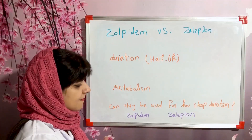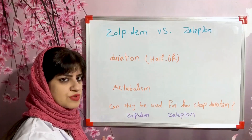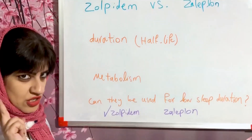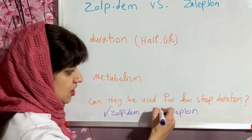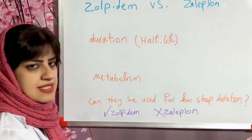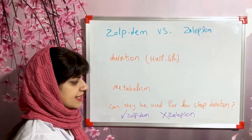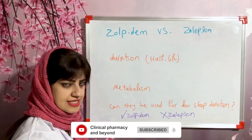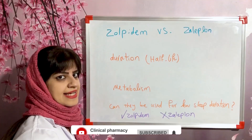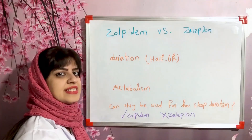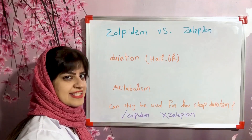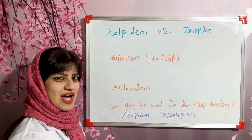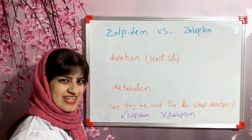To summarize: can these medications be used for low sleep duration? Zolpidem — yes, based on the two conditions discussed. Zopiclone — no. Zopiclone can only be used in patients with difficulties in starting to fall asleep, not for increasing the duration of sleep. Hope you enjoyed this video — please like, subscribe, and share. Thanks.